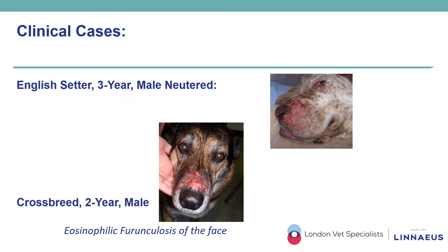The clinical severity of eosinophilic furunculosis of the face can be variable. In this three-year-old male neutered English Setter, lesions were coalescing papules and plaques — alopecic, erythematous and superficially ulcerated — involving the haired skin of the muzzle. The dog was lethargic and developed paresis. He was hospitalized and only after receiving fluids and several days of glucocorticoids did he start to recover. By contrast, a two-year-old entire male crossbreed with exactly the same clinical signs was systemically well and improved very rapidly with oral prednisolone at around 1 mg/kg, with rapid resolution and only mild scarring alopecia remaining.